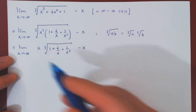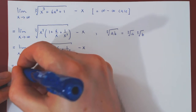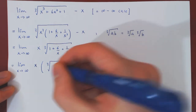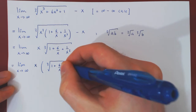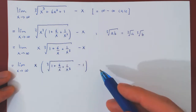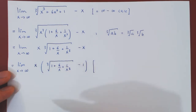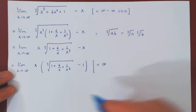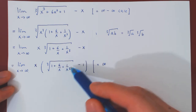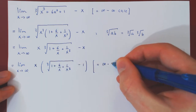Now I can finally factor x from the expression. Let's see what kind of case we're dealing with after factoring out x. Well, as x tends to infinity, x tends to infinity. As x tends to infinity, 6 over x and 1 over x cubed will both shrink to 0, leaving us with the cube root of 1, which is 1. So 1 minus 1 is 0, meaning we now have an infinity times 0 case.